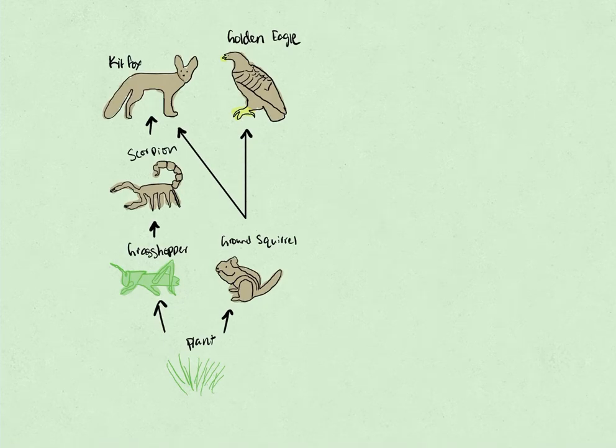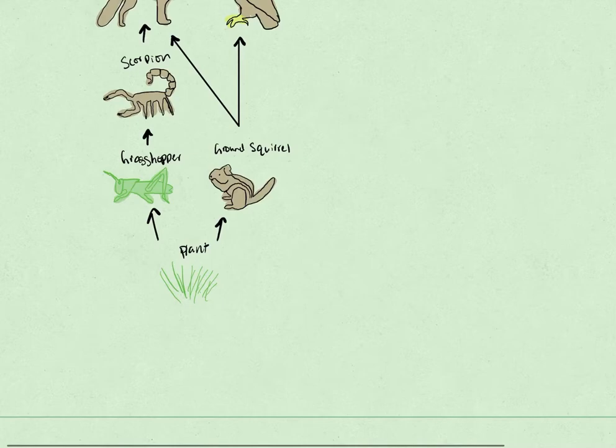Now let's talk about what exactly are the producers, the consumers, and so on in this food web. Obviously, we know our producer is the plant.